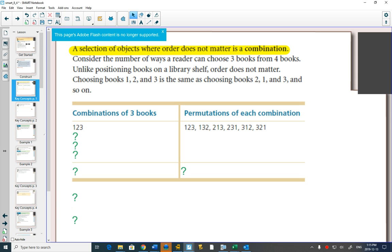In permutations, there would be 6 ways you could do that if you had to arrange them on a shelf, because it would be different if book 1 was first or book 1 was last.